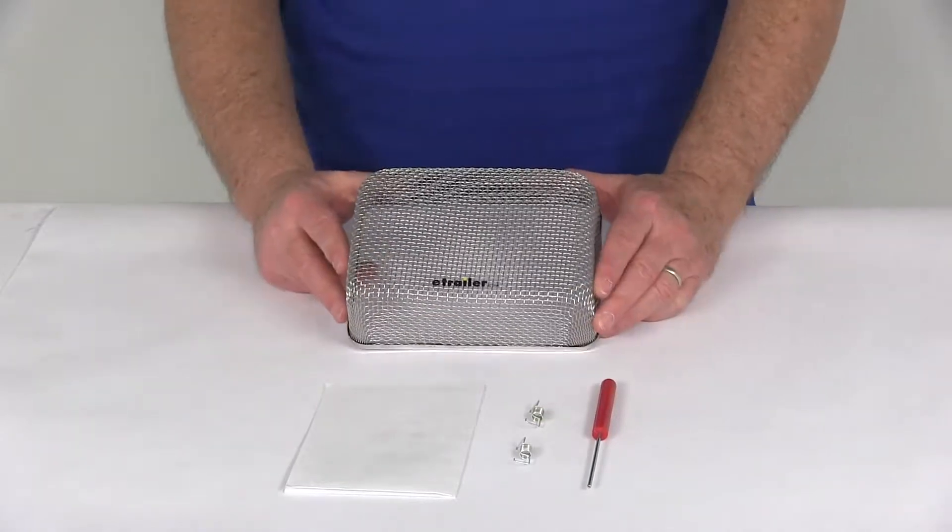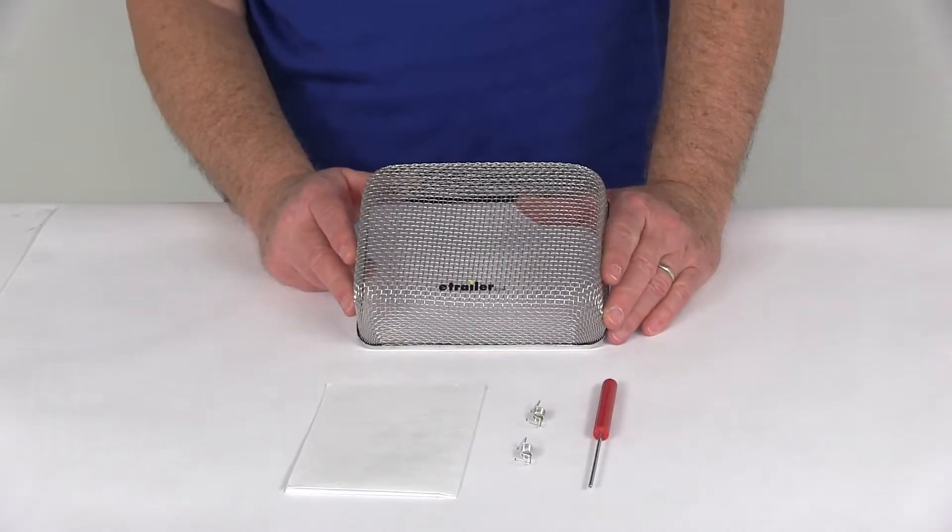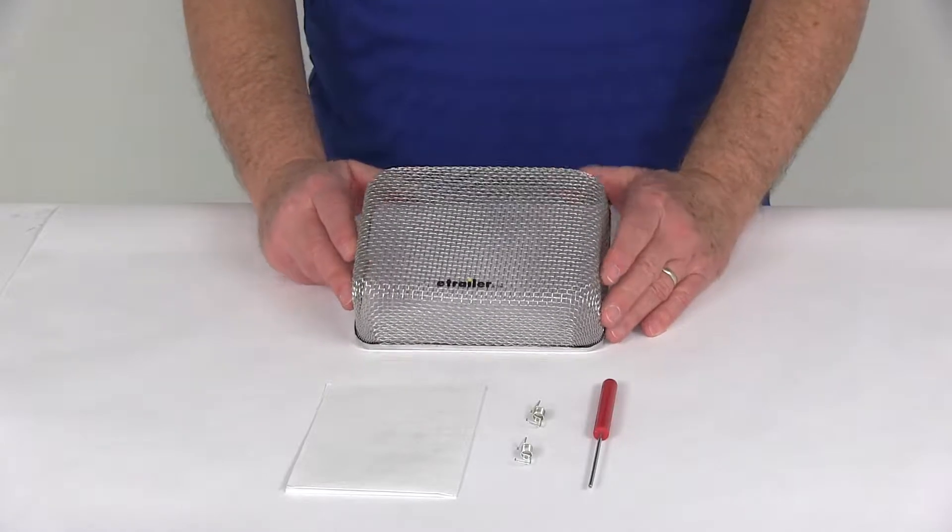That should do it for the review on the Valterra bug screen for the Atwood AFMD Model RV Furnace Vents.